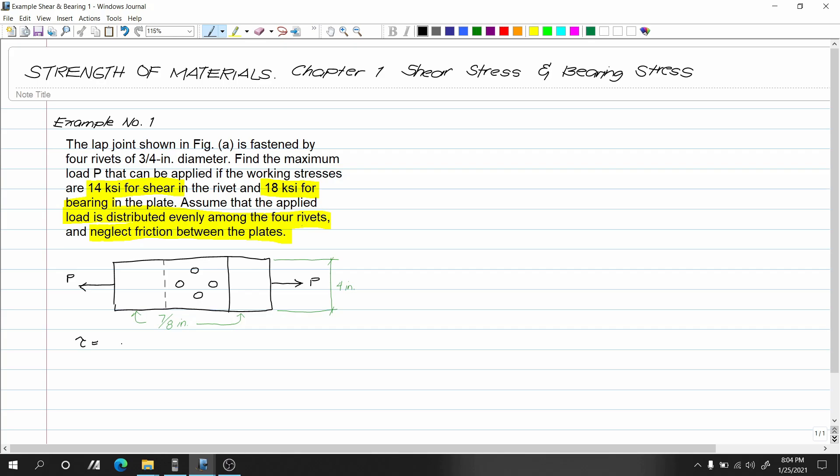Let's write down the given values. The allowable shear stress is 14 KSI, and the bearing stress equals 18 KSI.